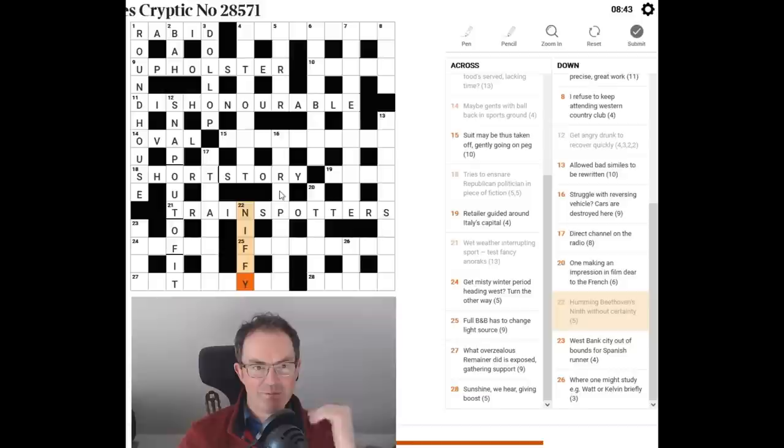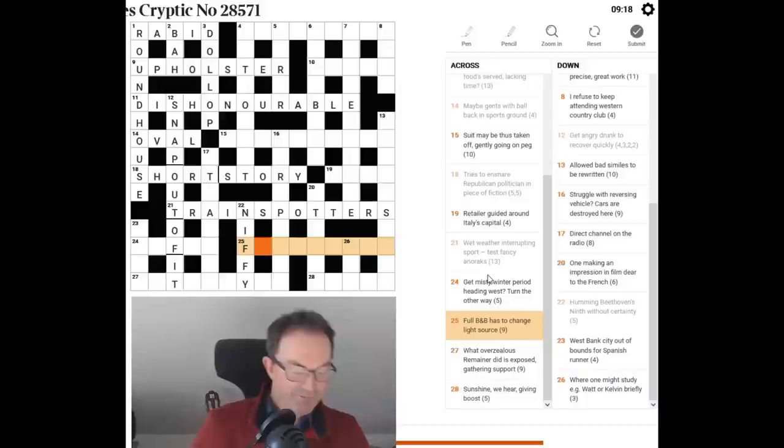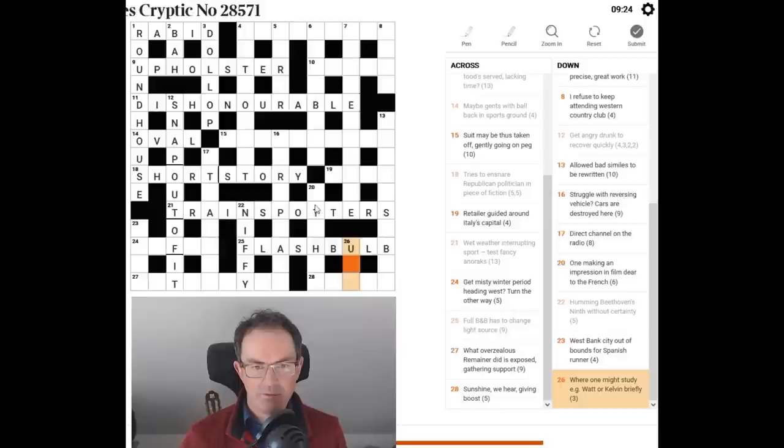I don't think I've ever done this at a Times Cross where literally everything I've looked at I've been able to solve. I mean not instantly but. Right. So we've got to pick carefully. I don't know. I might pick this one with an F. Oh no there's an F starting letter. I'm going to do that one. Full B and B has to change light source. Oh we could be coming to an end now. Full B and B has to change. I mean I want that to be an anagram full B. B and has. Because if we change those letters that would be nine letters. So that would be a light source. Flash bulb. I've done it again. Flash bulb.